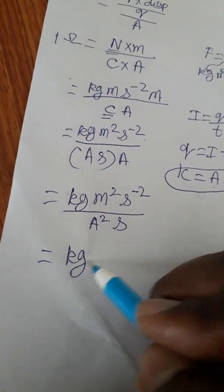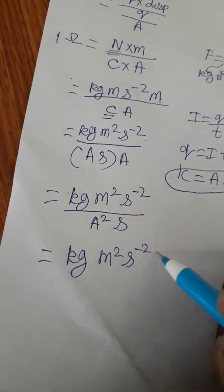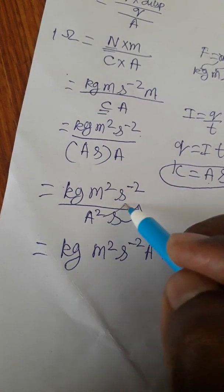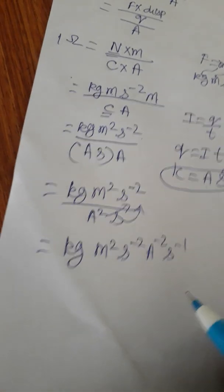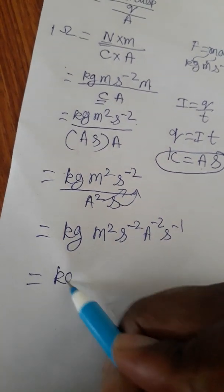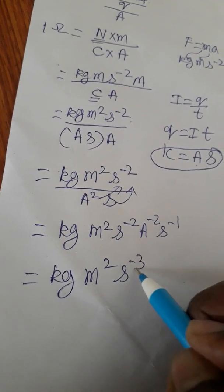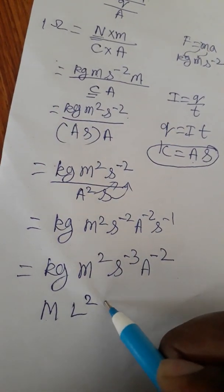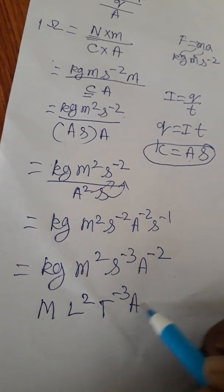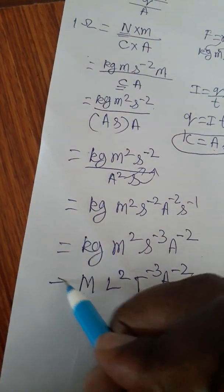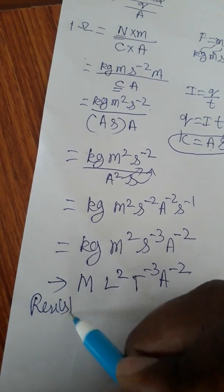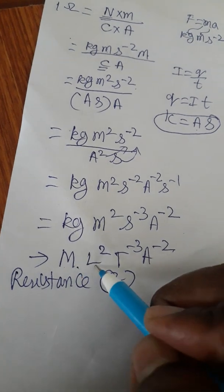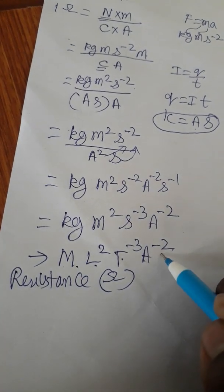That gives kg·m²·s⁻²·A⁻²·s⁻¹, simplifying to kg·m²·s⁻³·A⁻². Bringing terms from the numerator to the denominator, the power sign changes to the opposite. So the dimension formula is ML²T⁻³A⁻². This is the dimensional formula for resistance — so the dimensional formula for ohms is ML²T⁻³A⁻².